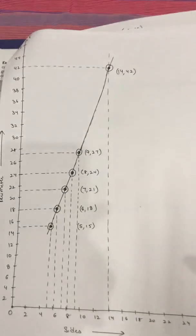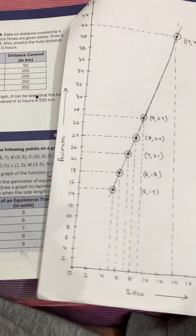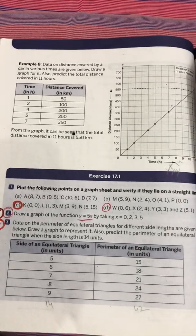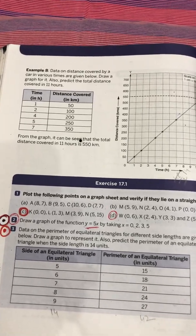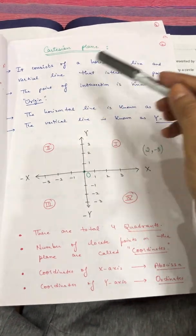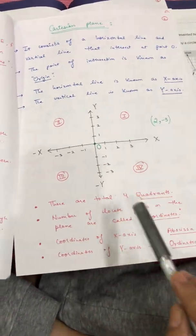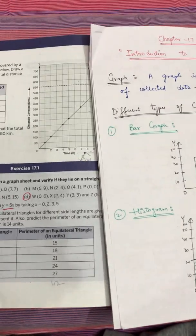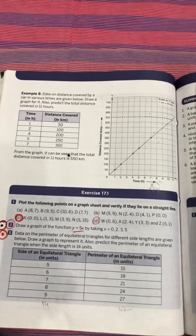This is the visual representation of data — that is a graph. This was Exercise 17.1, which is quite easy. We covered the meaning of graph, different types of graphs — bar graph, histogram, pie chart — line graph, linear graph, and the Cartesian plane with all its important terms. We then solved all questions in Exercise 17.1. You have to draw all the graphs in a proper graph notebook. Wherever you face any doubt, please call or message me. Bye-bye, take care.